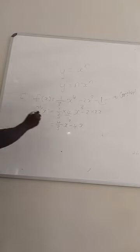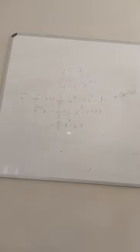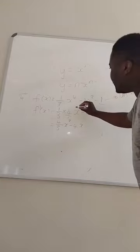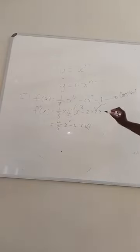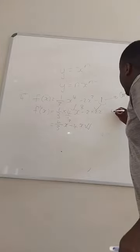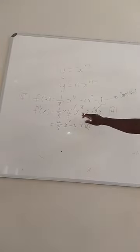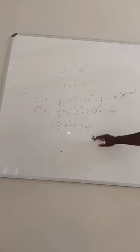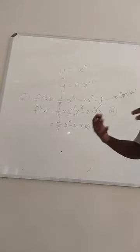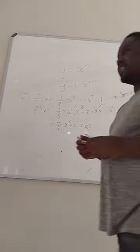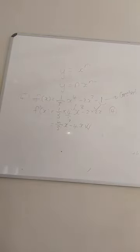If this is a four-mark question, the marker will award marks for each correct step — showing the derivative of each term — and then for the final answer. You must understand how your script will be marked. Mathematics is not just about getting the answer; it's about understanding the logic and showing your reasoning.